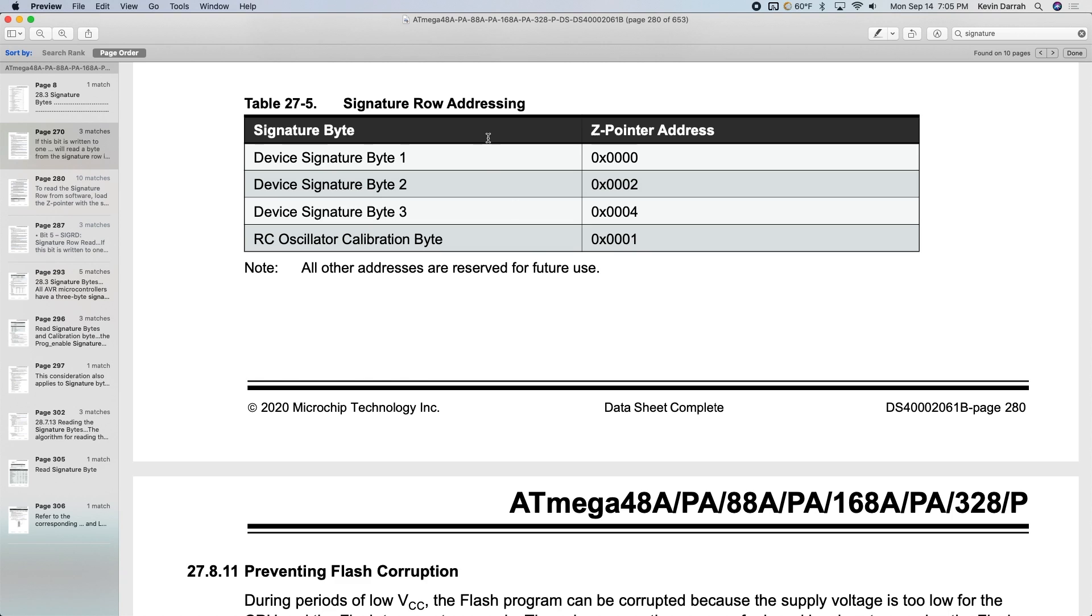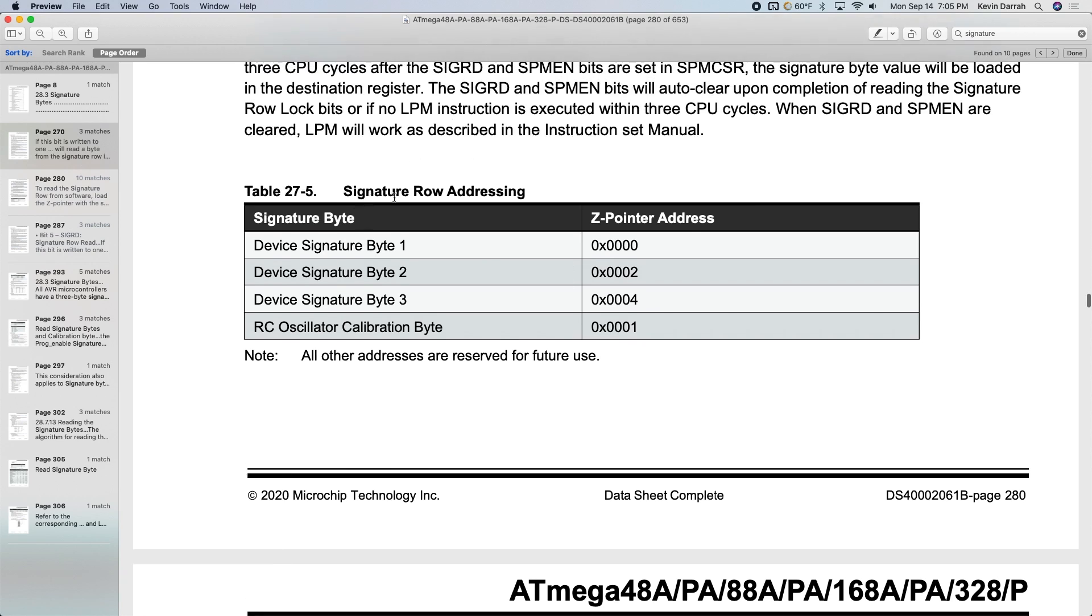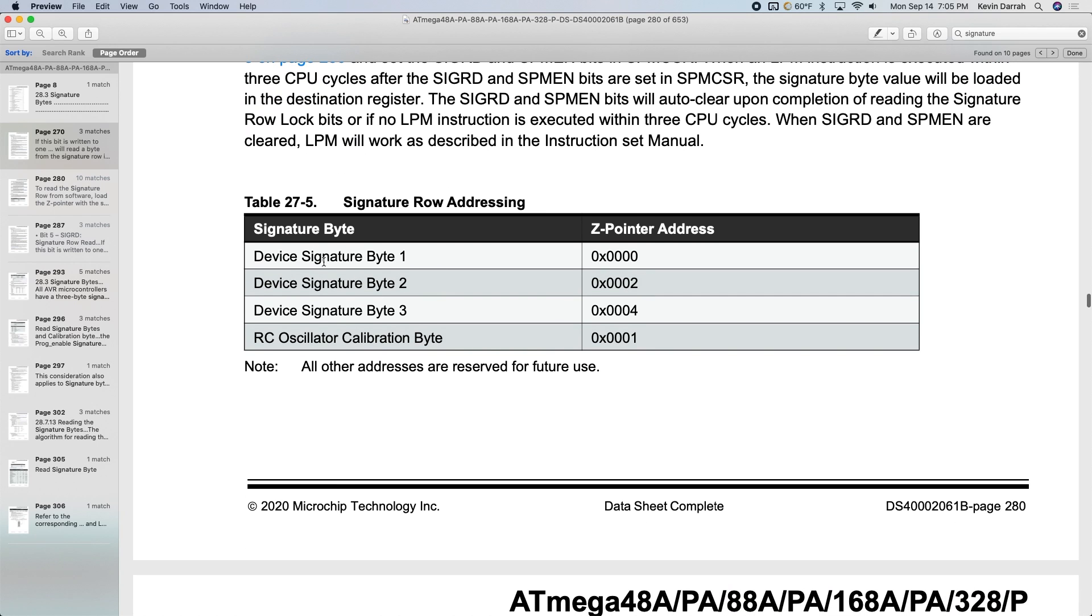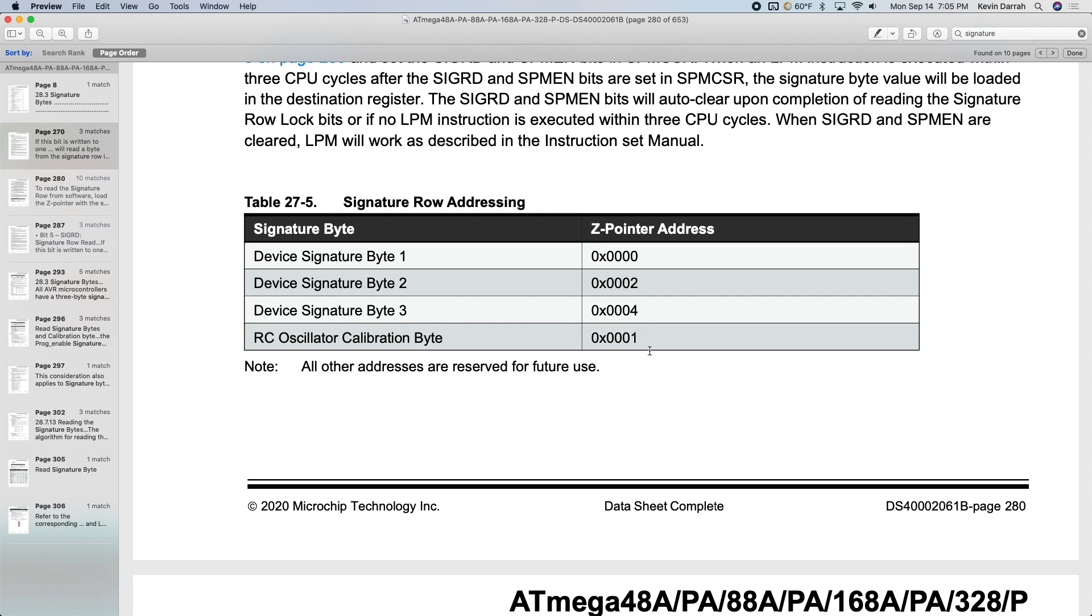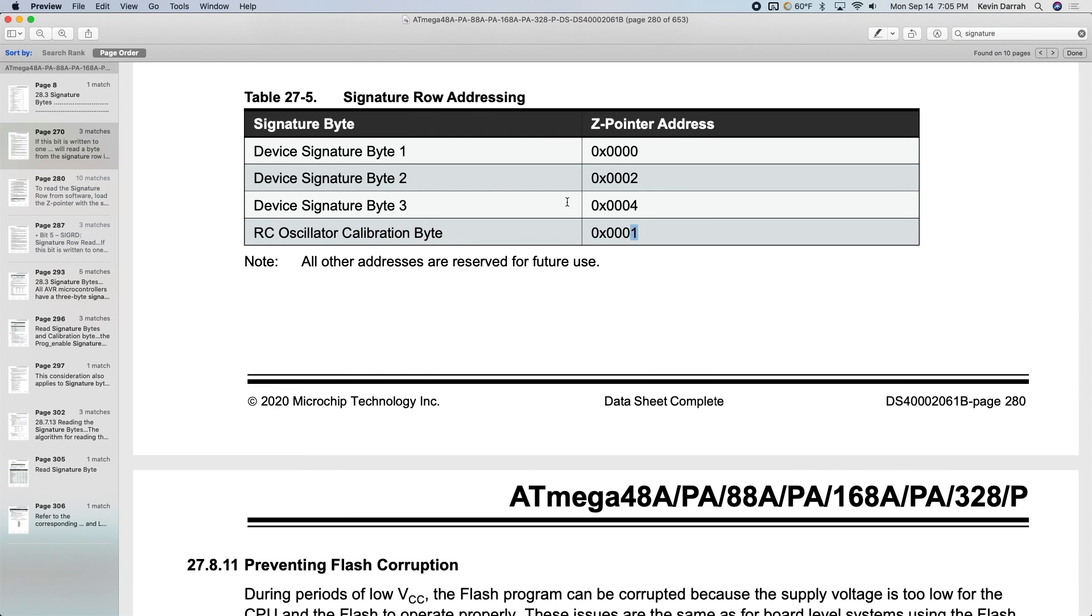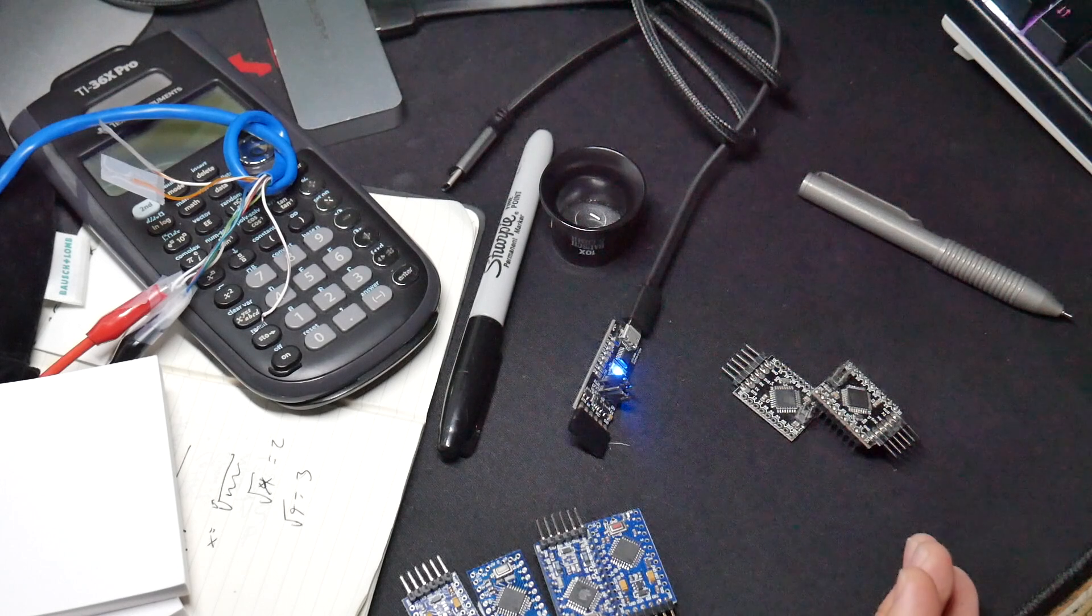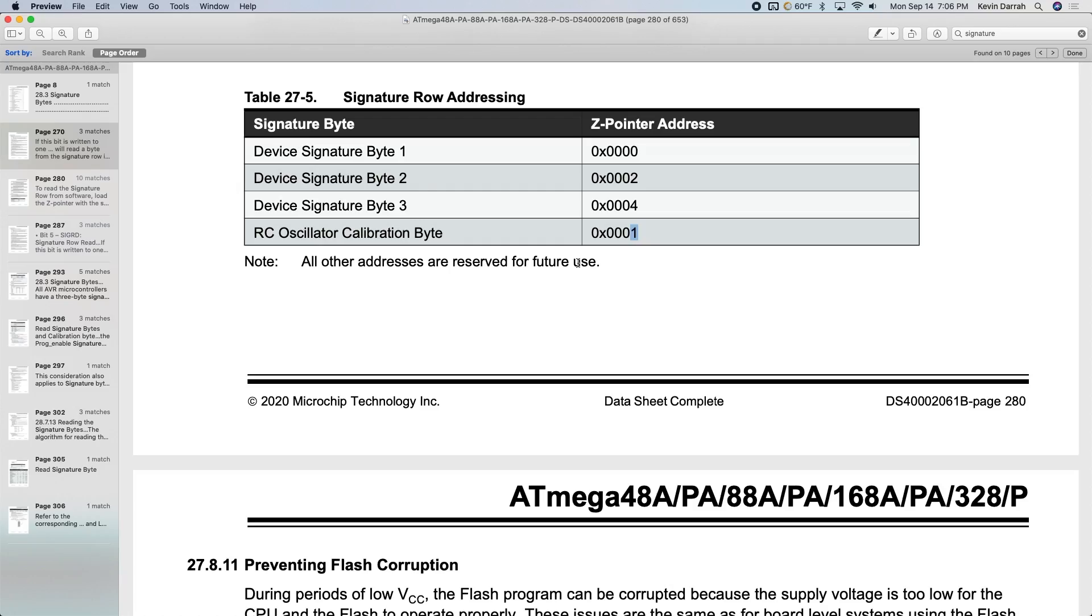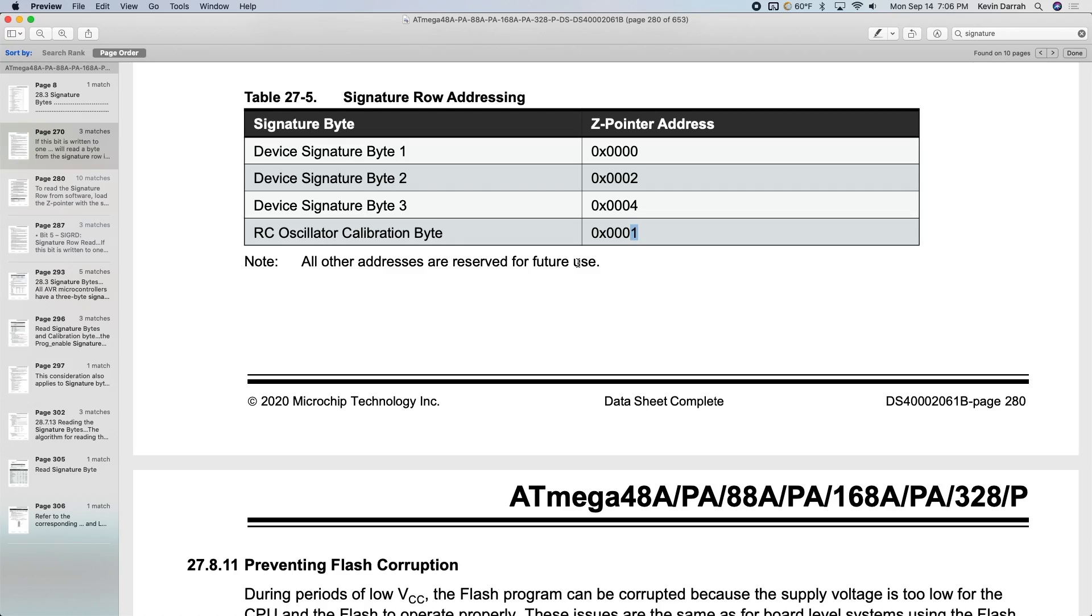But real quick, let me show you something else in the datasheet. So you see here, it's showing you the signature row addressing. And that's basically what we're doing. We're just going to read all of the contents out from the signature row. And you see here, it's showing you the three signature bytes there at zero to four, and then the calibration byte at location one. All other addresses are reserved for future use. So we're reading them out anyway, we'd have no idea what they're used for. But would the counterfeiters actually copy that over as well.